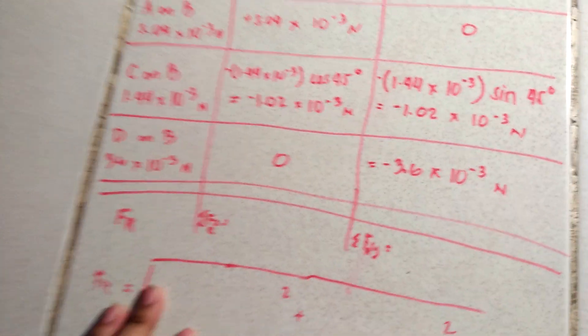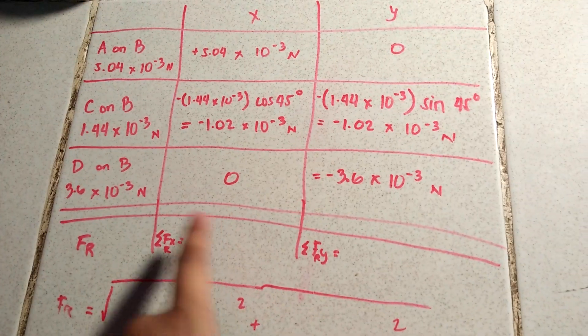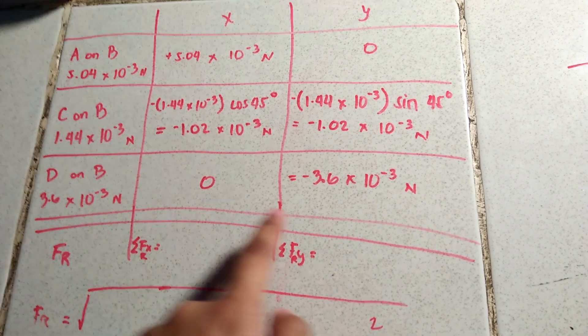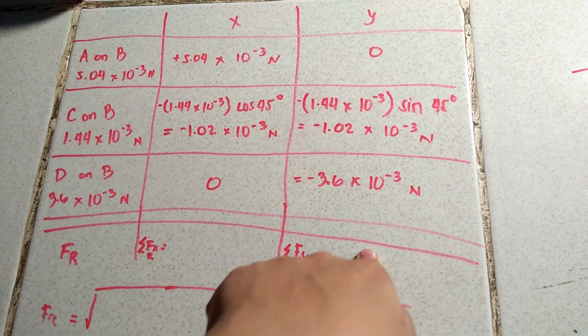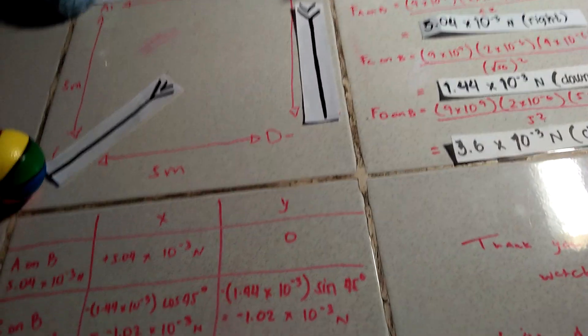So D on B. D on B is vertical. So it doesn't have an X value. But its Y value, as we calculated a while ago, is negative 3.6 times 10 to the negative 3. It's negative because it's going down. An attractive force. So going down.